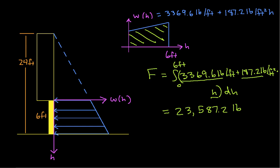The next thing we need to do is find H-bar. So we know that H-bar will be the integral from 0 to 6 feet of H times W of H DH, over the integral from 0 to 6 feet of W of H DH. This guy, we've already got. We just figured this out. This is the magnitude F. So what we need now is to figure out this guy.